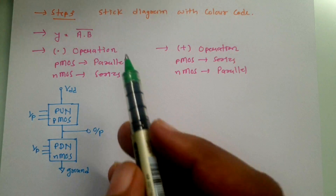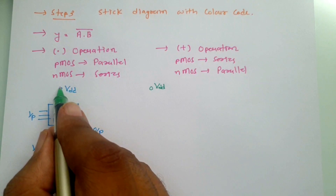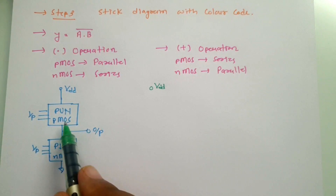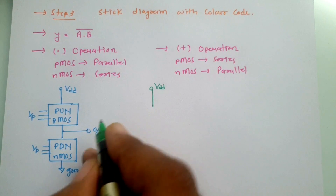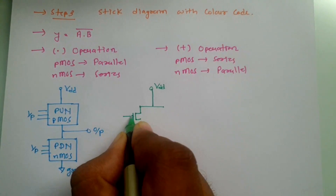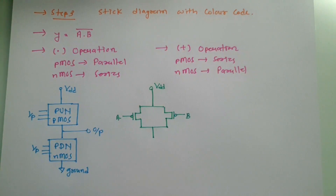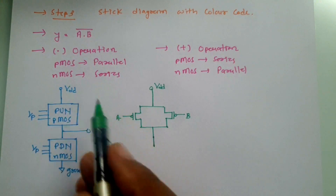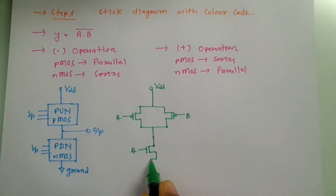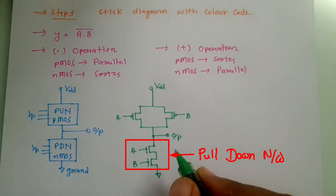Now I'll explain how we form the CMOS circuit for Y equals A dot B whole bar. We have VDD at the top. The pull-up network is made up of PMOS, and since we have a dot operation, PMOS transistors should be in parallel — so here I'm connecting PMOS A and PMOS B in parallel. For the pull-down network made up of NMOS, dot operation means NMOS should be in series — so here I'm connecting NMOS A and NMOS B in series. Output is taken between the pull-up and pull-down networks.